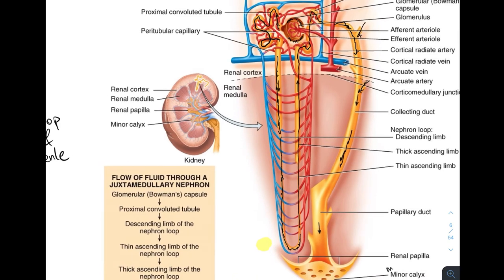All of these tubules, regardless of where you are, have a peritubular capillary right next to them. These peritubular capillaries are found everywhere, and that's where changes in the filtrate take place — either reabsorbing things we want back in the bloodstream, or secreting things from the bloodstream into the tubule. All changes throughout the nephron involve a tubule with a peritubular capillary right next door.